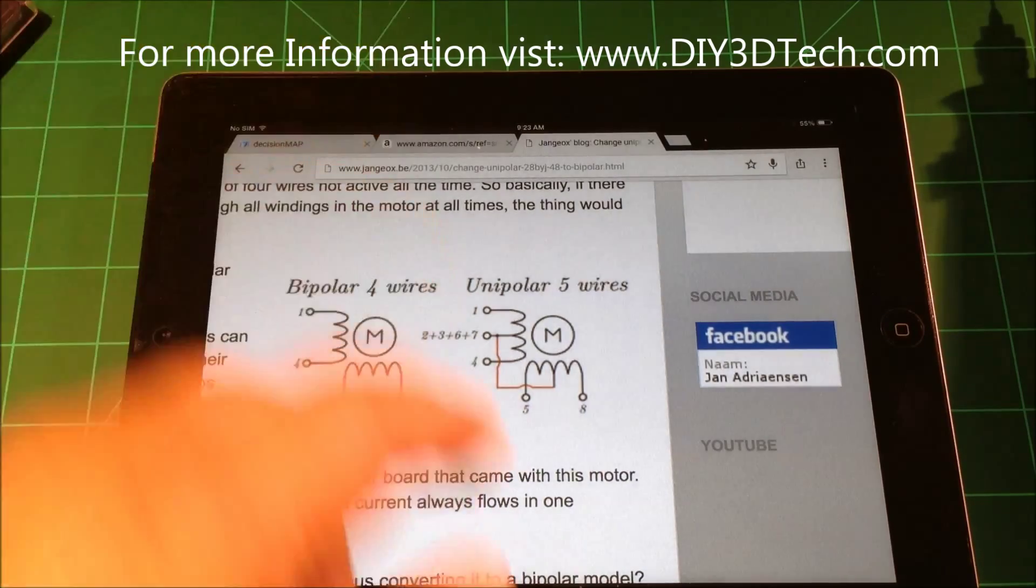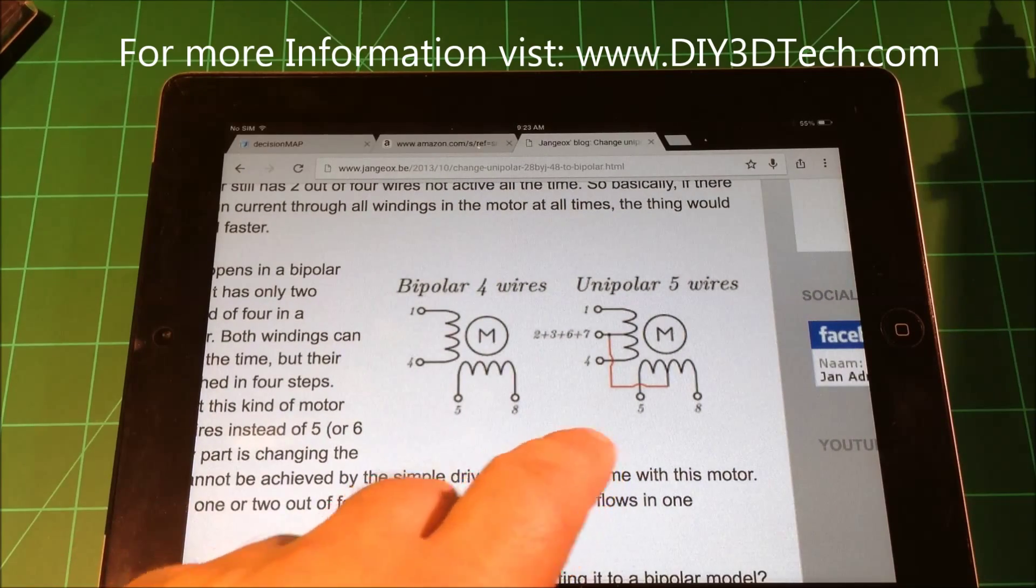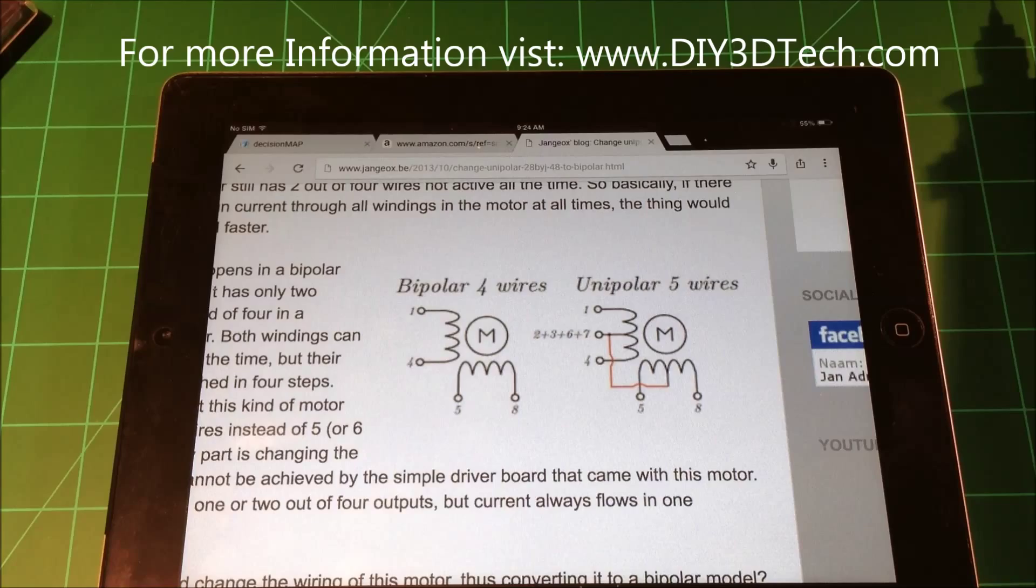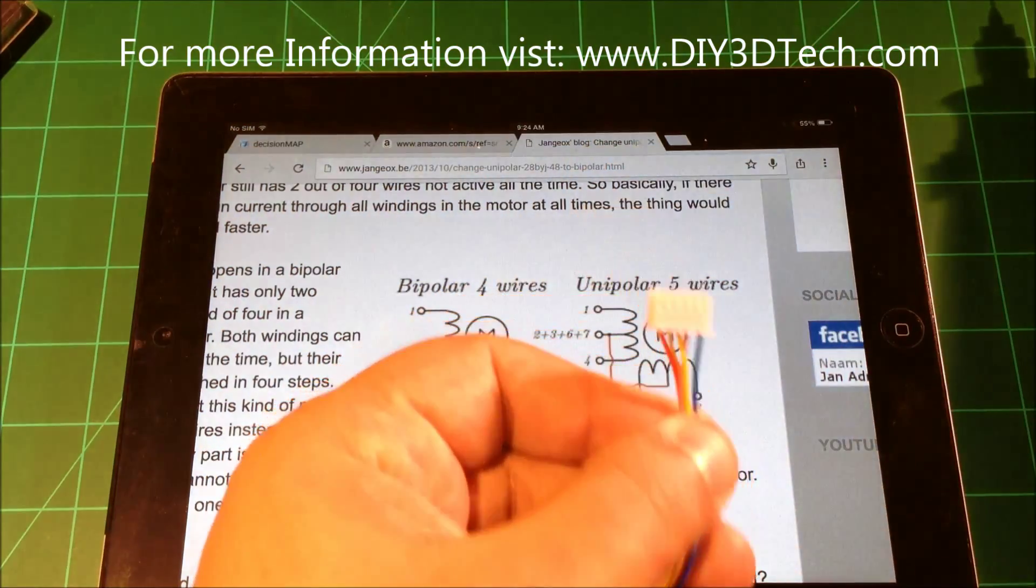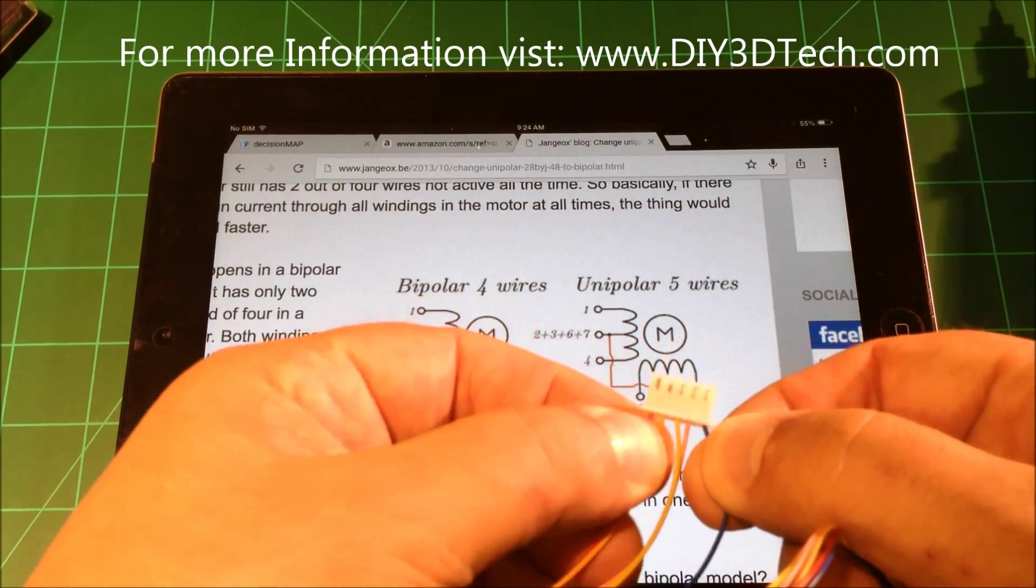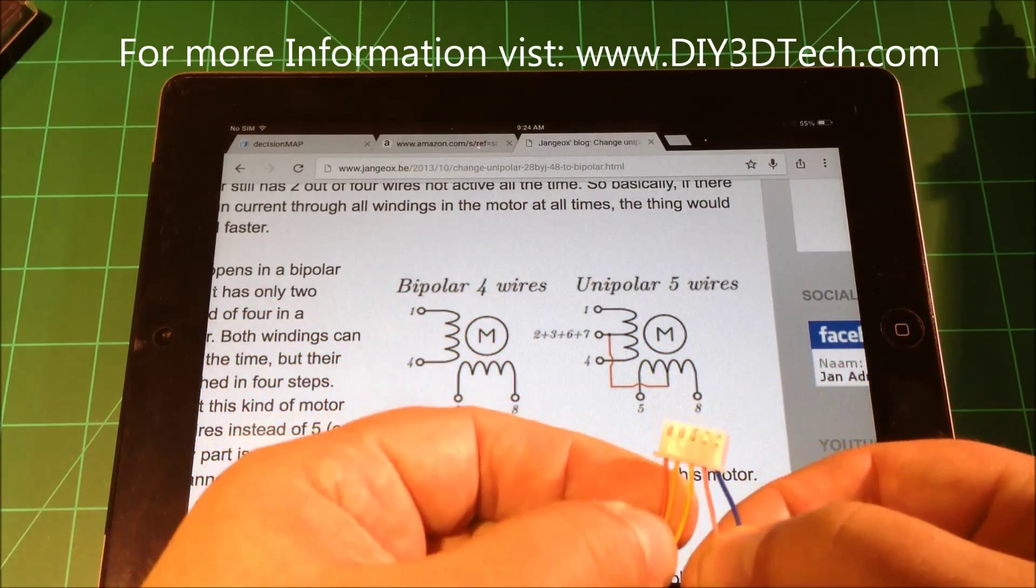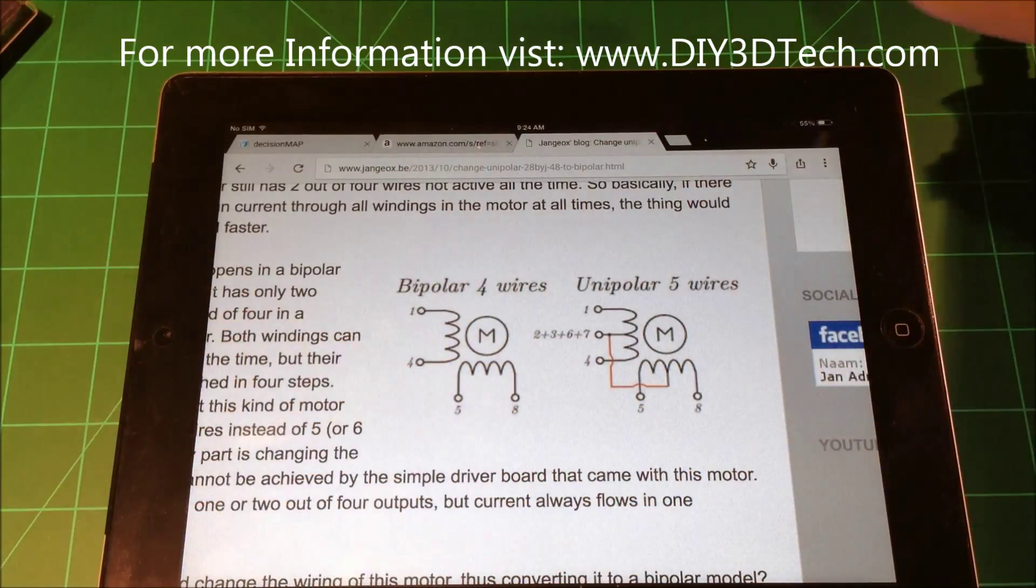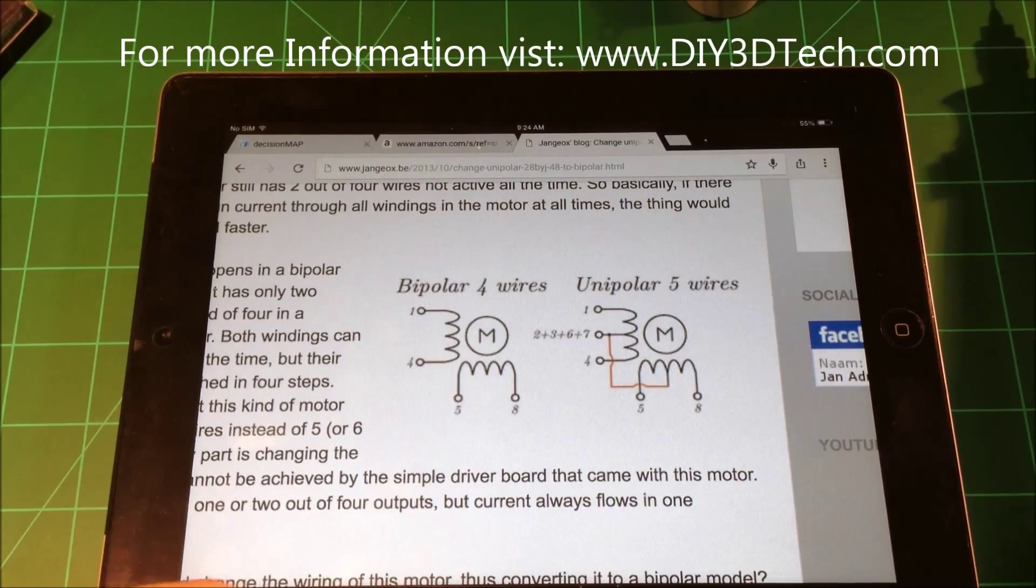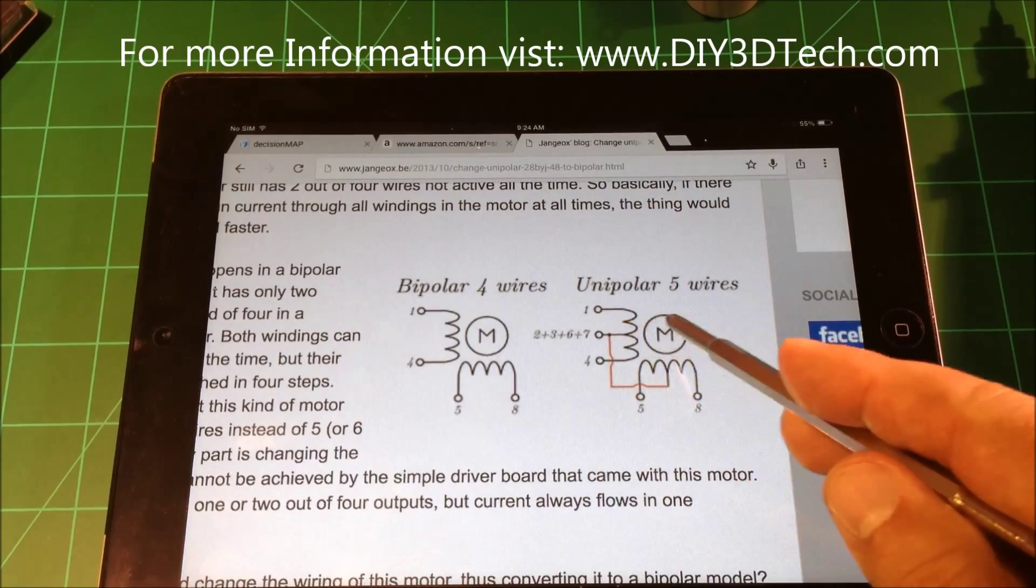Basically what I have here is on the iPad a bit of a description. In a unipolar scenario we have a five wire matrix, as we have here with the 28BYJ-48. You can hopefully see the five wires here. One of the problems is when we look at this diagram, it's splitting the coil sizes.